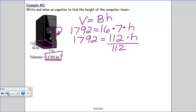So we'll divide by 112 on both sides. 1,792 divided by 112 is 16, and then on the right-hand side, we have H. So your final answer is that the height is 16 inches.